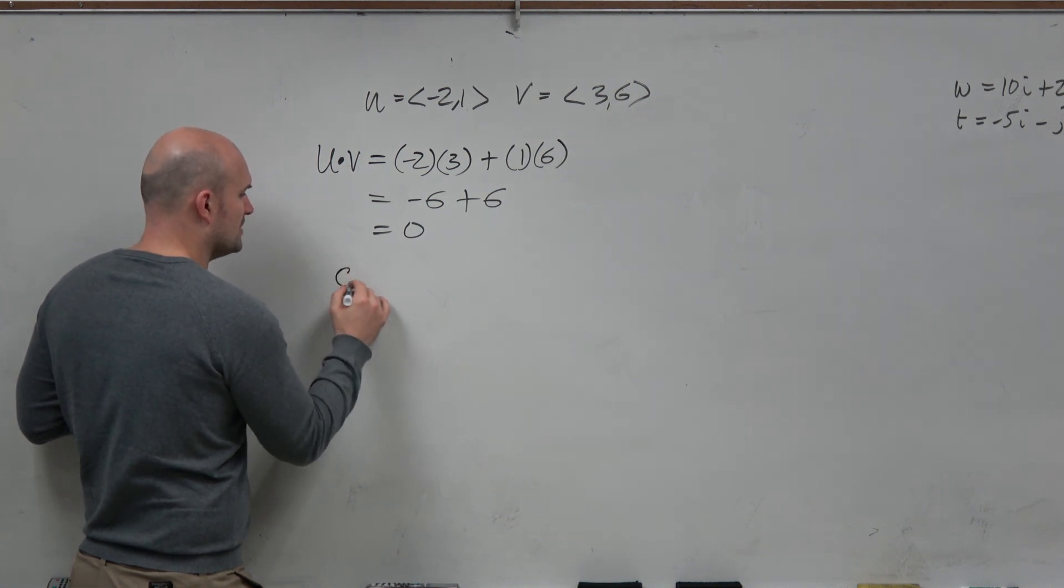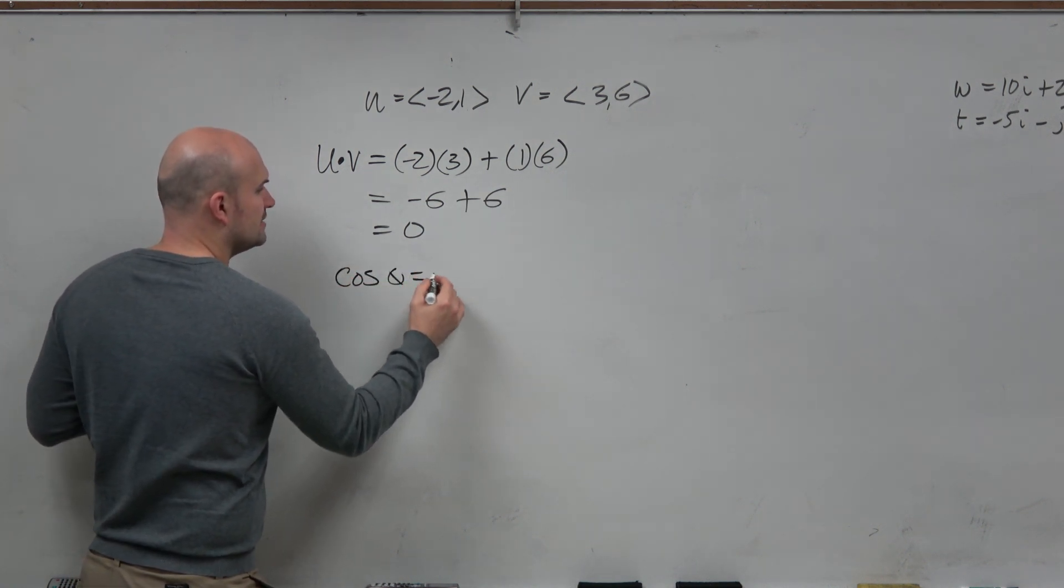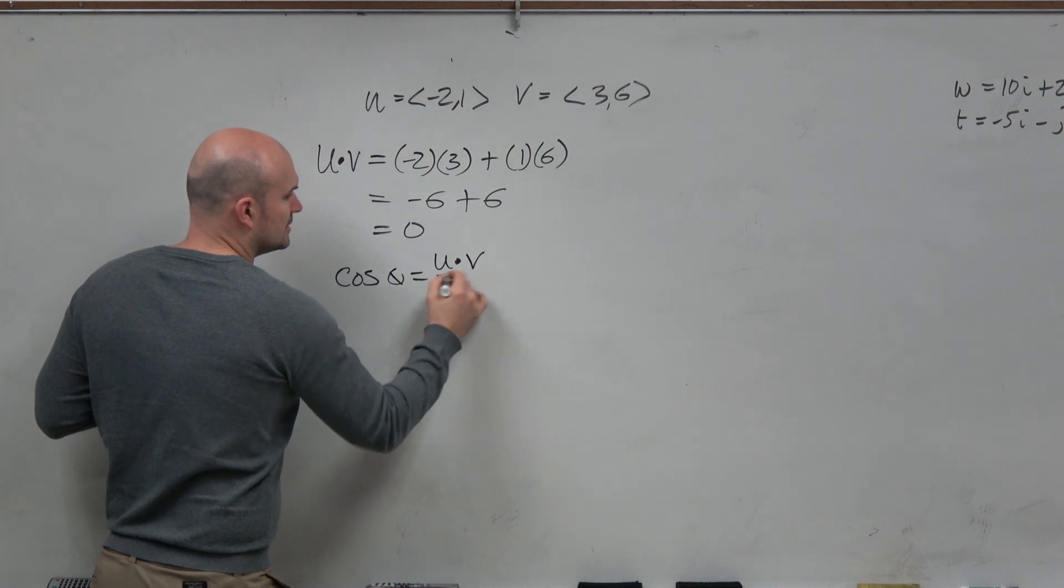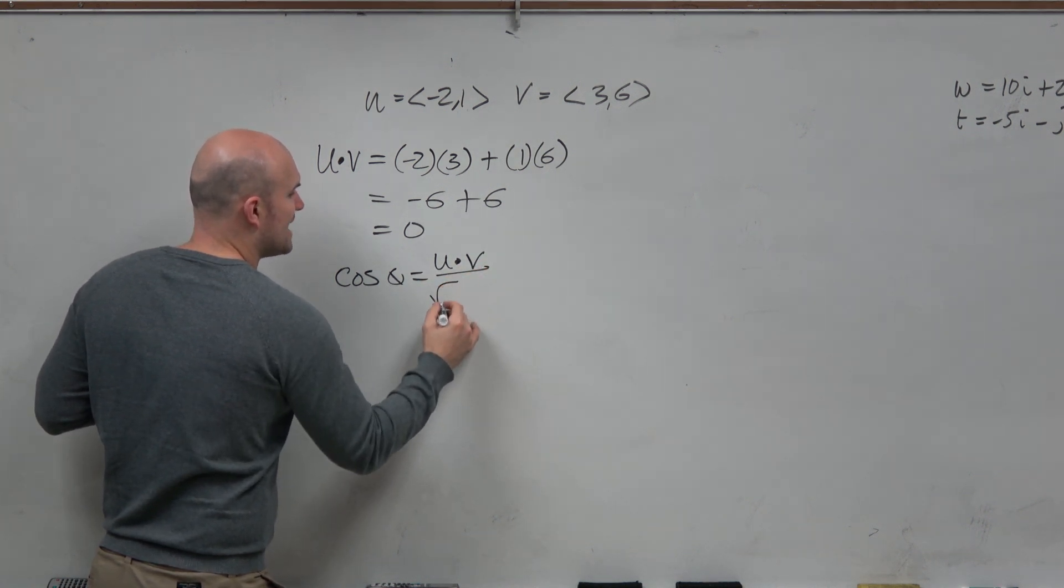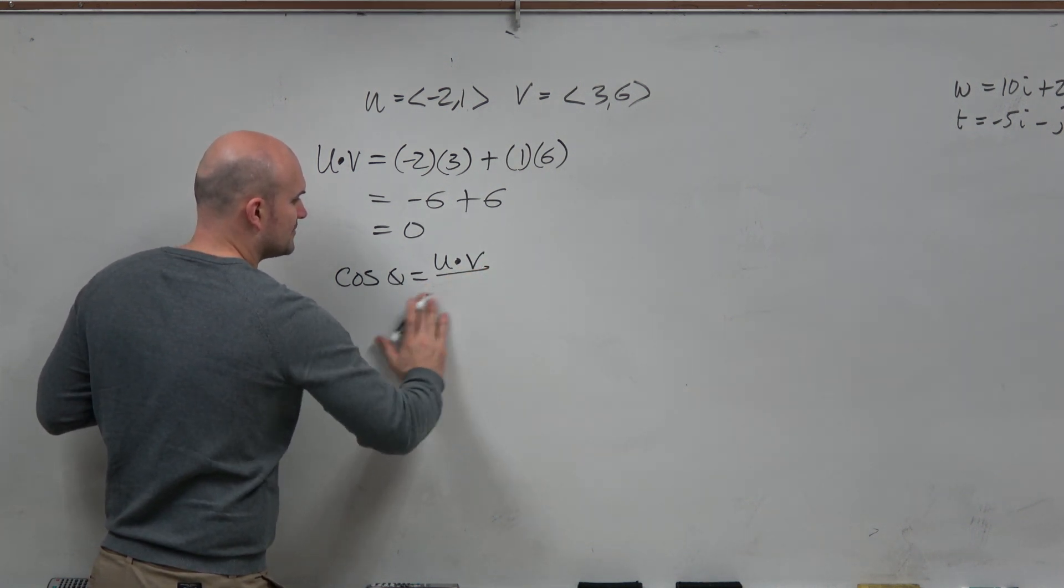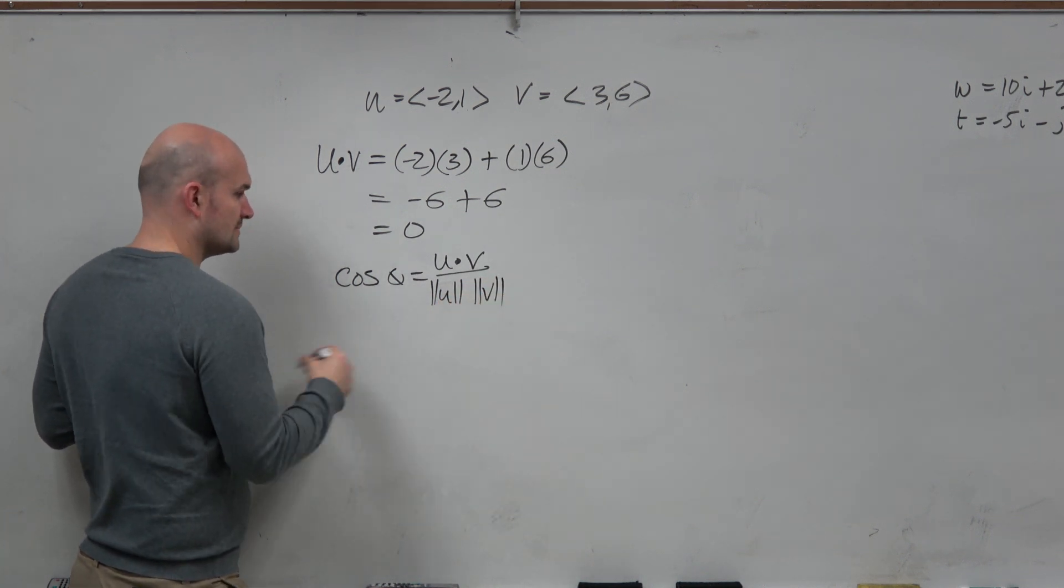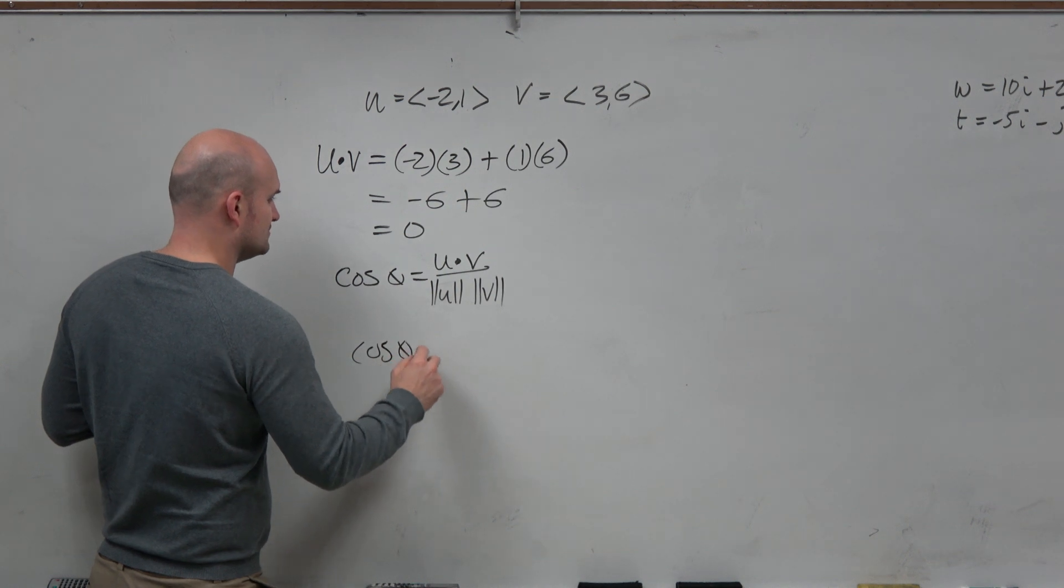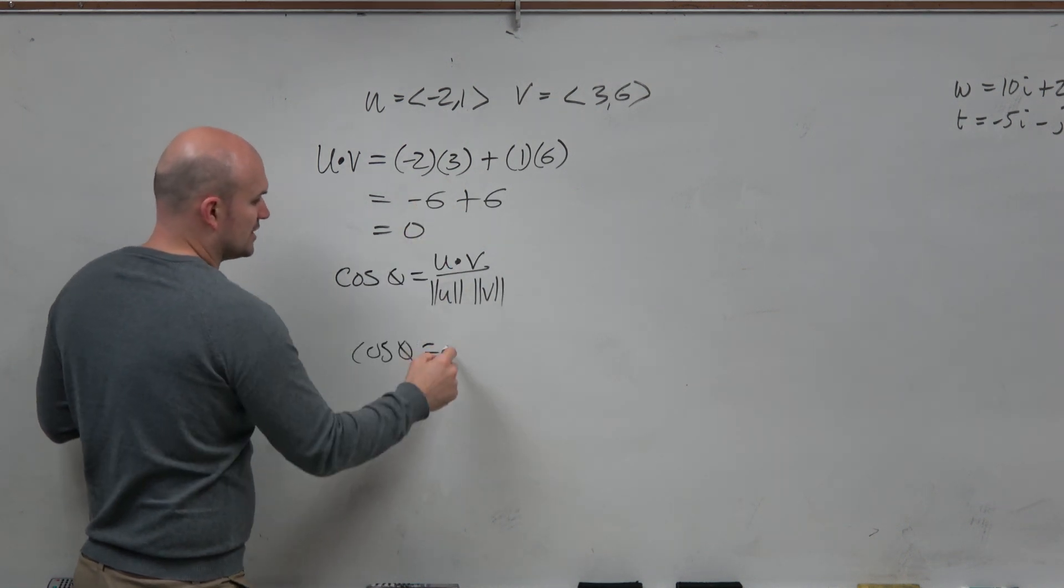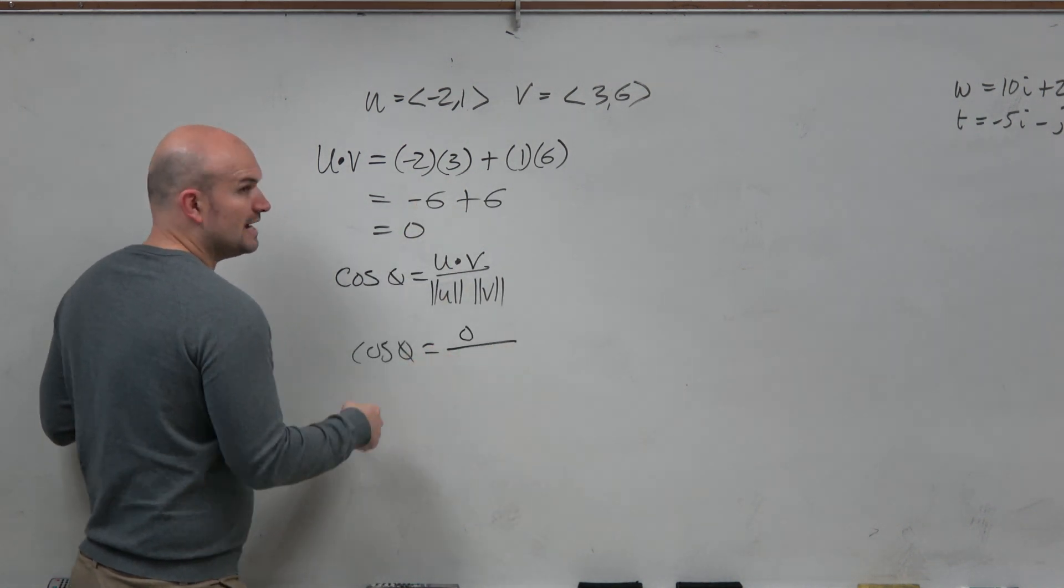So remember, the other formula is going to be the dot product divided by the magnitude of u times the magnitude of v. So therefore, cosine of theta equals u dot v, which you already know is 0.